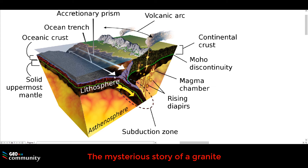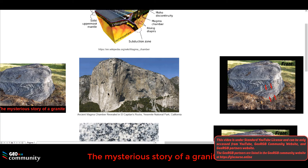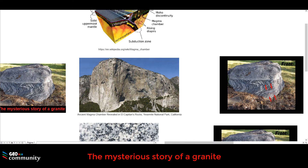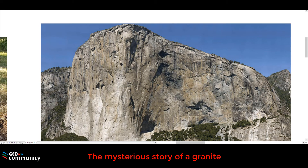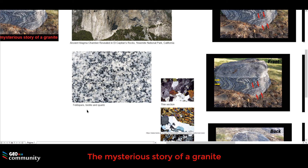We are going to start this history at the magma chamber, where depending on the composition of the magma, when it gets cold, it can form a granite. This is an example — what we have here is the magma chamber revealed in El Capitan rocks in Yosemite National Park in California. This is a big mountain and it is a massive granite. If we make a zoom in this area, for example five centimeters by five centimeters, what we are going to get is something like this. This is a typical granite where the most common minerals are going to be feldspars, biotite, and quartz.